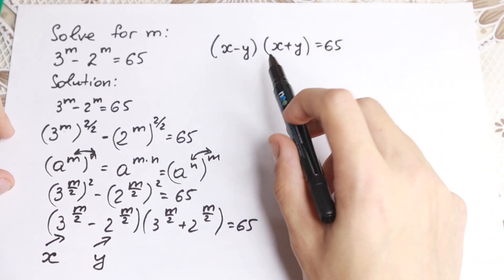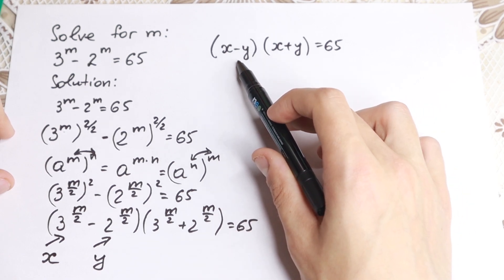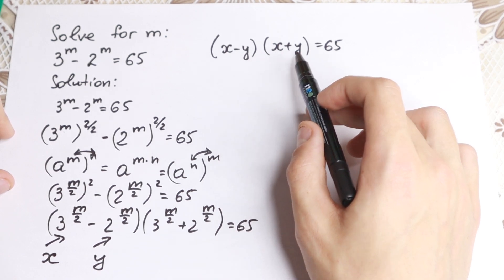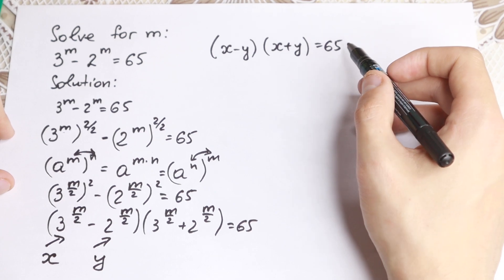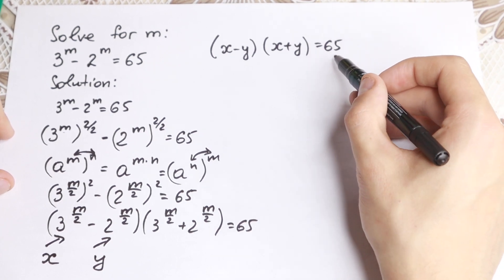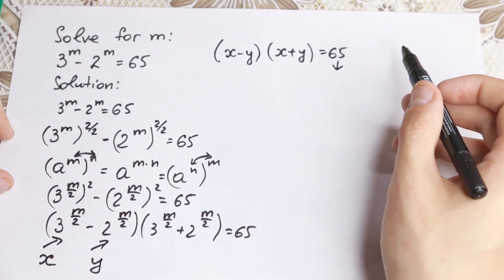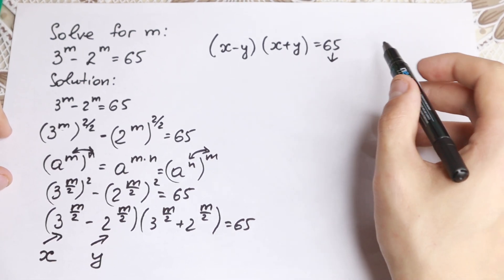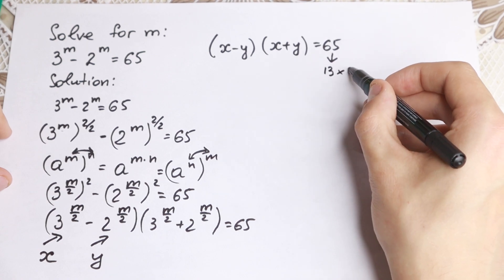If you look closely, we have a product of two parentheses. This is some number we don't know about and this is some number we don't know about. But how can we factor this? How can we factor this 65? We can factor this 65. The best way to factor it is 13 times 5.